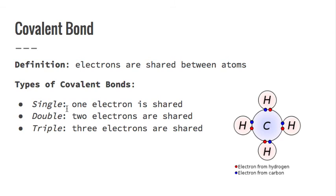A single bond means it has one electron shared, double is two, and triple is three. In this example here, carbon is sharing one electron with each of the hydrogens — that still just makes it a single bond. Carbon are the little blue ones and hydrogen are the little red ones, and they're sharing their electrons with each other. That's just a single bond.